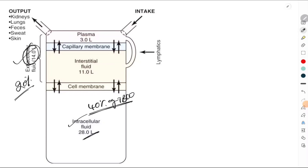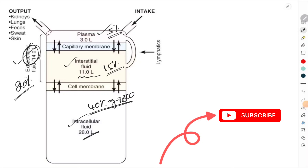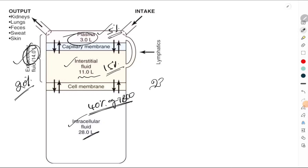The extracellular fluid is divided into two compartments: there is an interstitial fluid and also an intravascular fluid which is called as plasma. The interstitial fluid contributes 15% of the total body weight, which comes to roughly about 11 liters. The plasma is about 5% of the total body weight, coming to 3 liters.